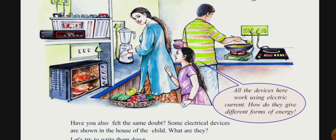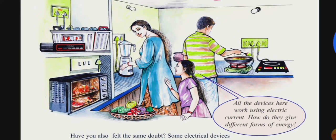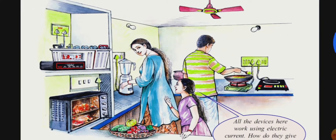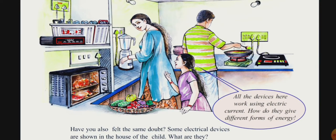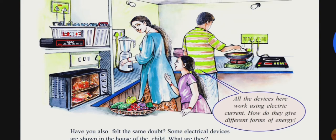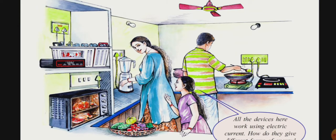We are seeing more things: mixing, induction cookers, stove, bulb and fan, etc. We are seeing a lot of electrical forms. Now, we have a bulb, a light bulb, and we have a fan, and a mixer on the other side. Then we have to look at the energy conversions.